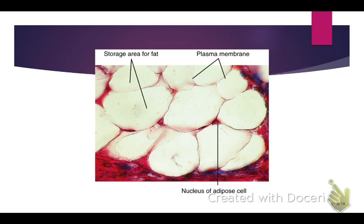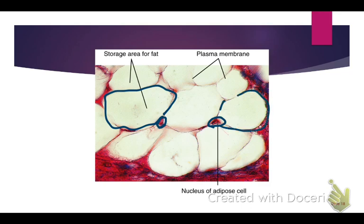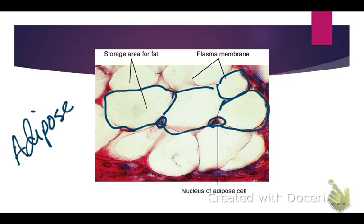Looking at this image: I can see cell membrane here and a little cell there — most of this is empty space. This is adipose tissue. If you lose weight, each one of these cells is going to get smaller.